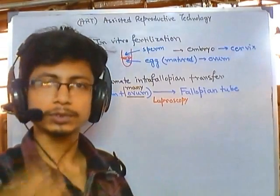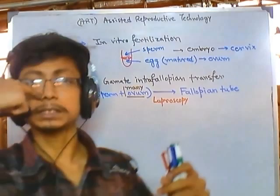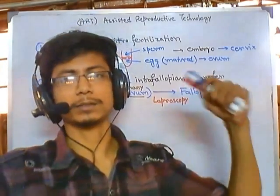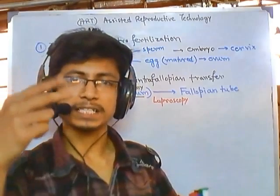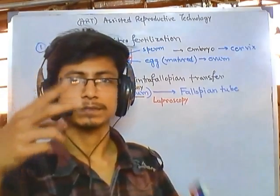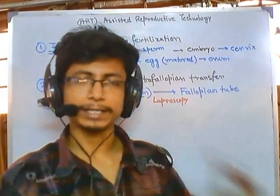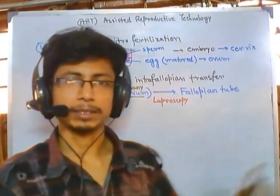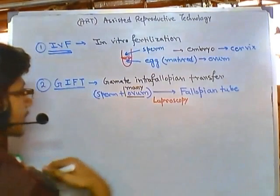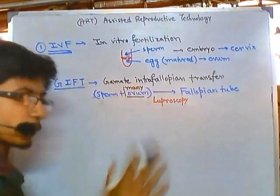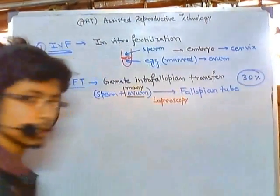This process is conducted using laparoscopy — a newer surgical technique where a laparoscope is used. A laparoscope is a tube-like surgical tool with a camera attached at the end, and it has scissor-like attachments in different configurations to operate by looking inside the body. The success rate of Gamete Intra Fallopian Transfer is usually around 30 percent.